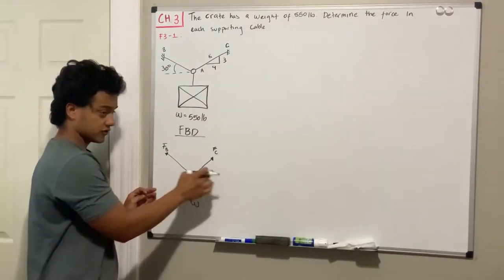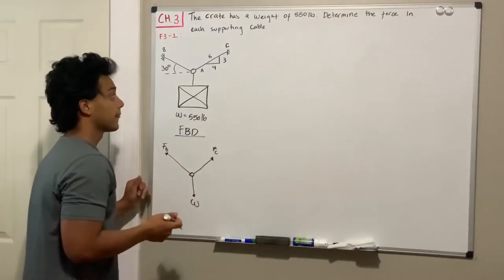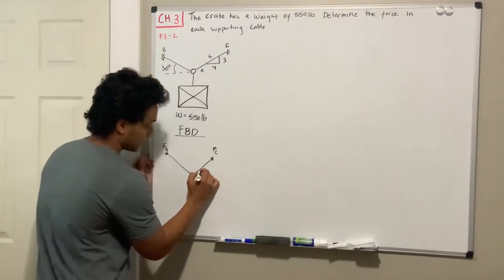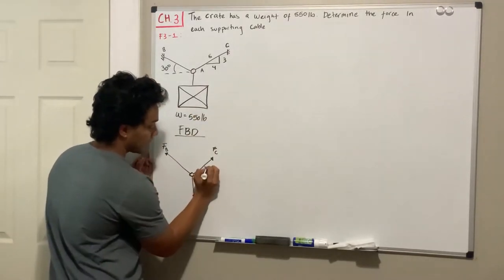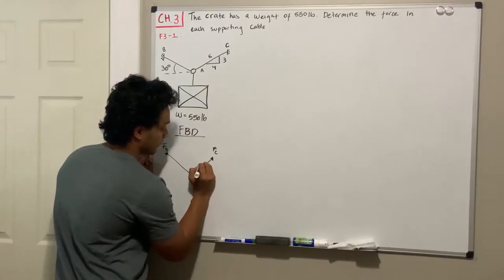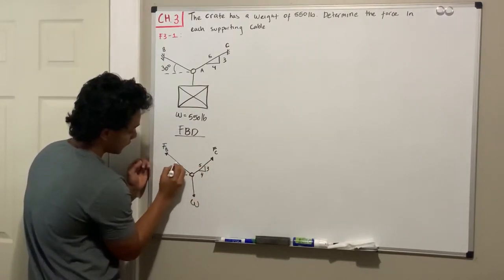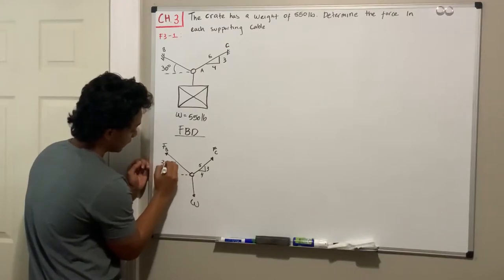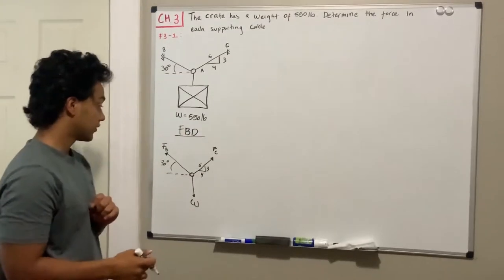So the summation of these three forces should be equal to zero in all directions. Let's not forget that this cable is represented by a 3-4-5 triangle and the force B is represented by 30 degrees with respect to the x-axis. We also know that W is equal to 550.